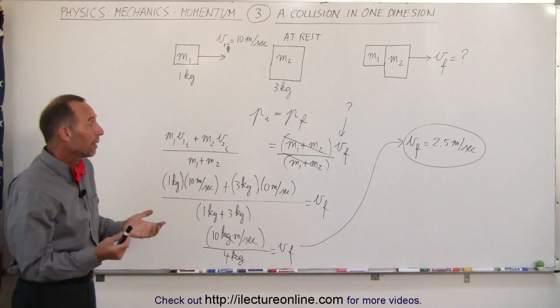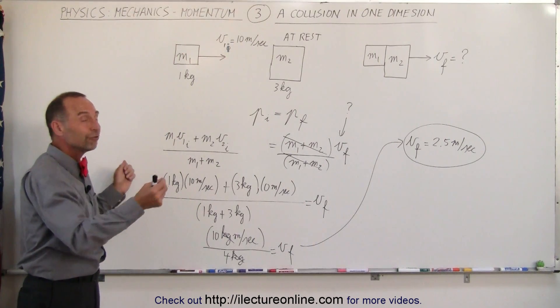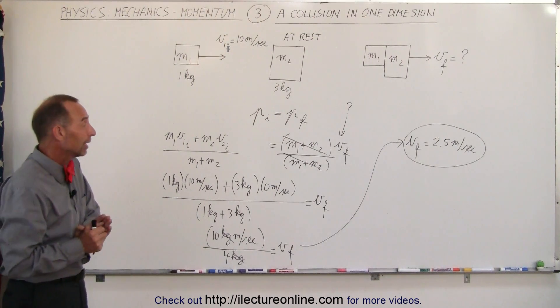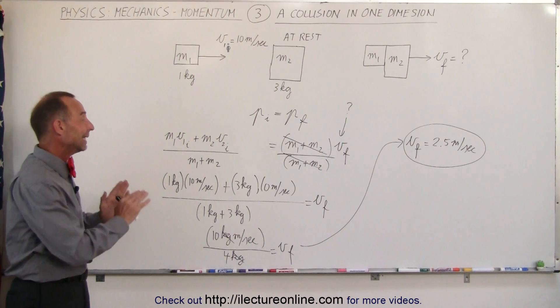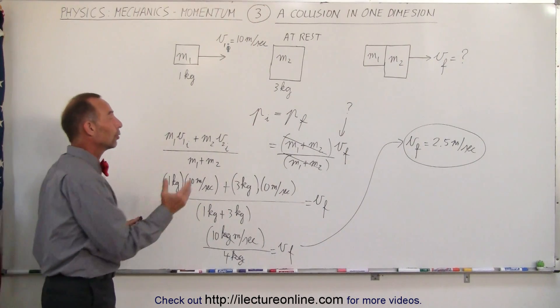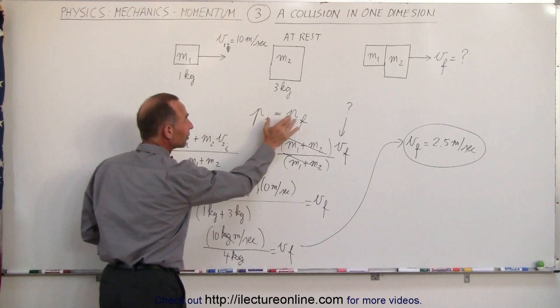So that's how we use momentum. Momentum is extremely useful to solve problems that involve collisions. Again, the reason why it's so useful is because momentum is always conserved, no exceptions, in every collision. And that's why we can always start with saying the initial momentum must always equal the final momentum.